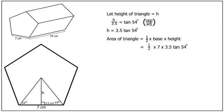Now that's the hard part done already. We now multiply by 5 to get the area of the end, the cross-section. Area of end equals 5 times a half times 7 times 3.5 tan 54 degrees.